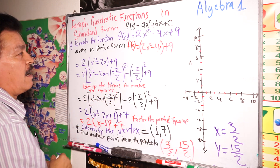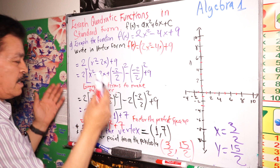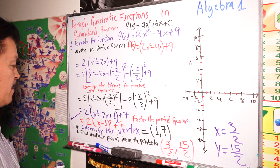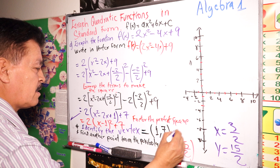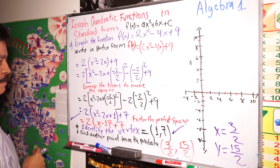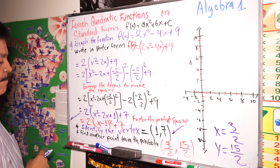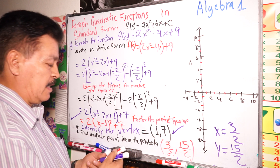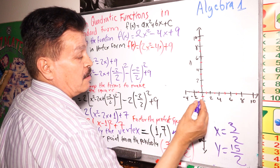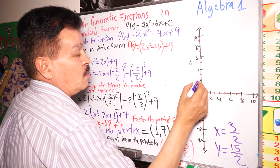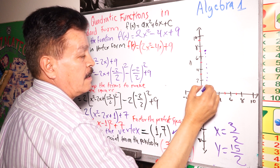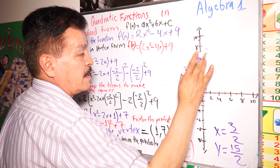The graph is not too big — it's a small graph, but this is the answer. The vertex is this point right here, and the vertex form of the parabola is written here. Now we identify the vertex at point (1, 7): on the graph that's at x equals 1 and y equals 7, which is right here.